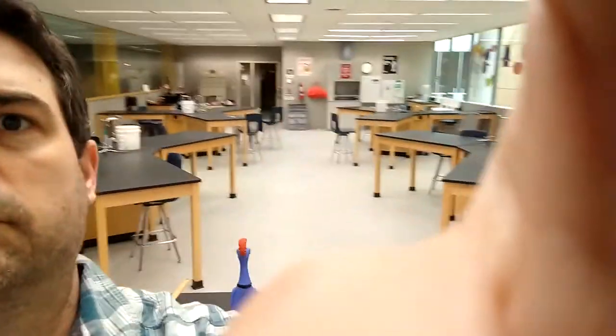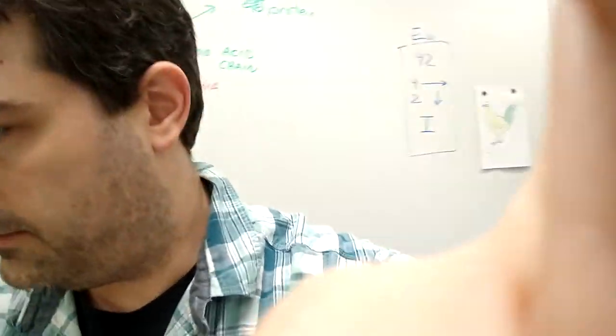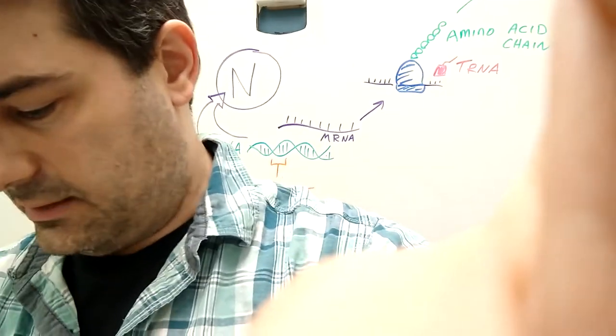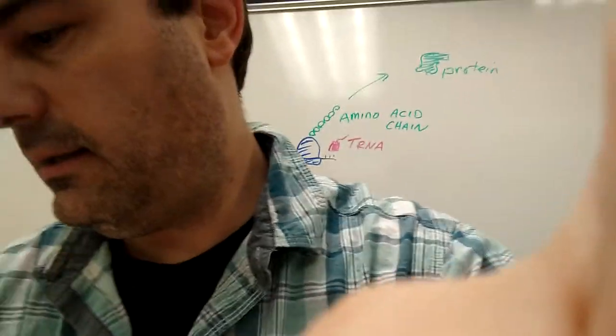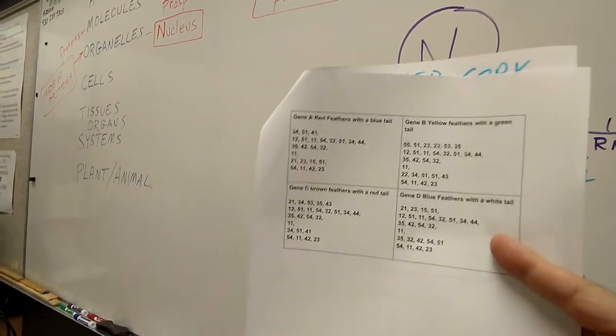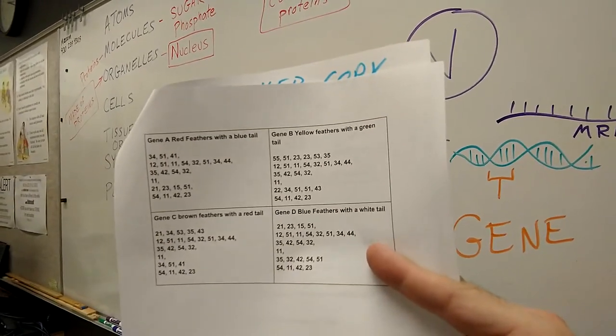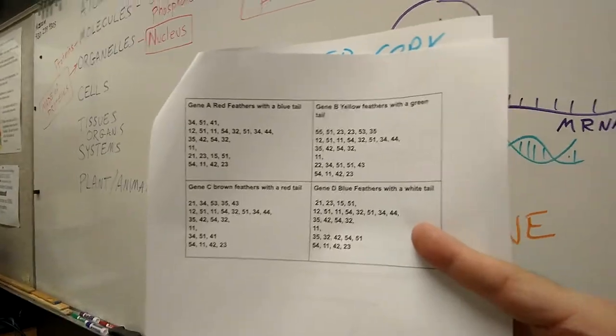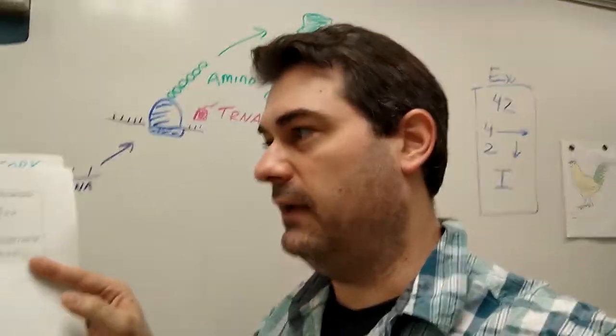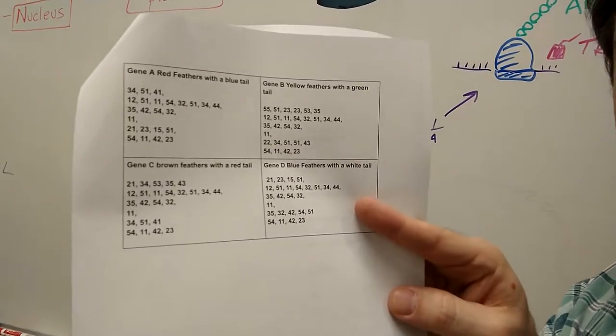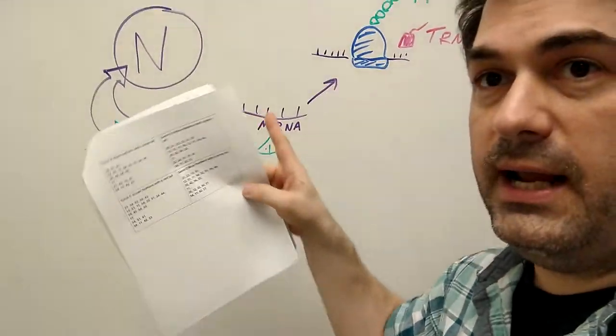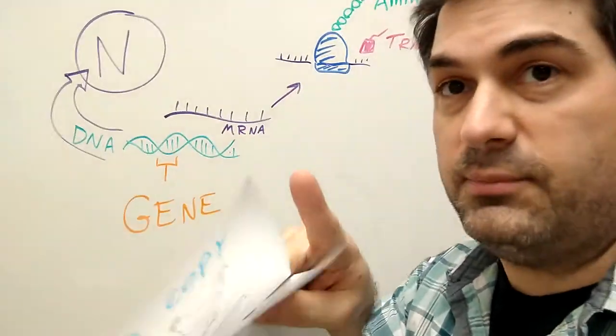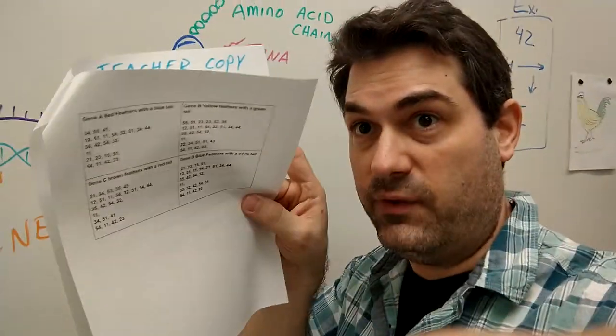The way that the activity worked was this. Across the hall, I've got a storage closet. In the storage closet, I have different genes. The genes are just a couple of combinations of numbers here. Each one of these little boxes is a gene. I've got here gene A, B, C, and D. Each group got a letter, like you're getting gene A. This is hanging up on the wall in the closet because the closet's our nucleus. The messenger RNA goes in there and makes a copy of this, leaving the original taped to the wall. They come out back into the classroom with this written down.